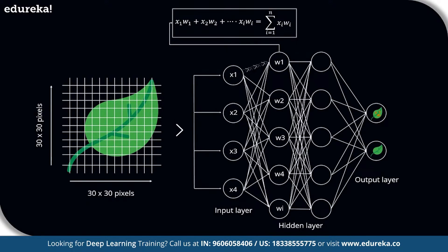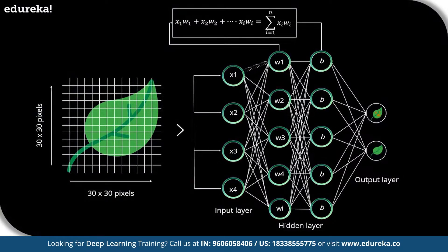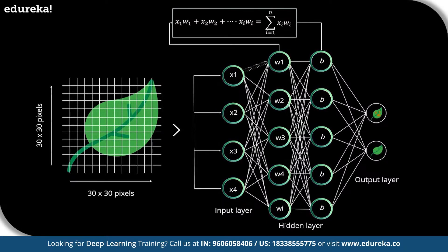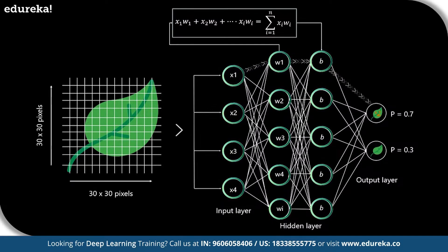The inputs are then multiplied with their corresponding weights and their sum is further processed through the network. A numerical value called bias is assigned to each perceptron. Furthermore, each perceptron is passed through an activation function — also known as a transformation function — that determines whether a particular perceptron gets activated or not. An activated perceptron is used to transmit data to the next layer. In this manner, the data is propagated forward through the neural network until the perceptrons reach the output layer, where a probability is derived which decides whether the data belongs to class A or class B.